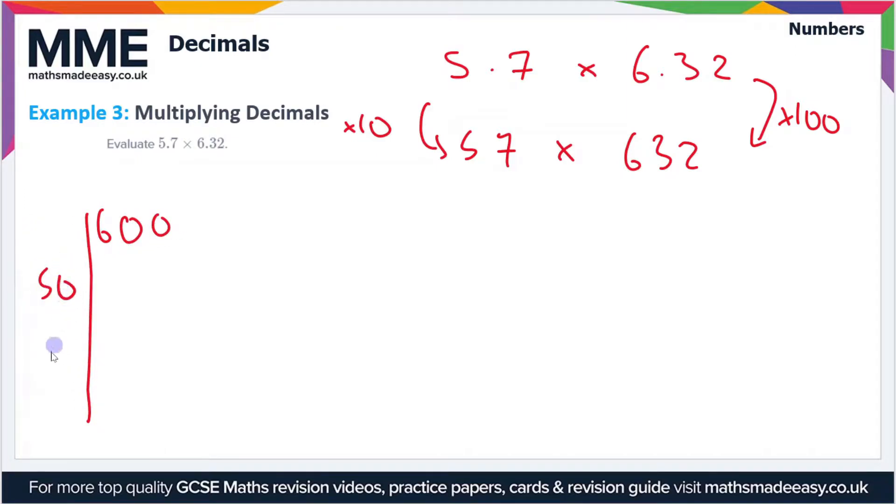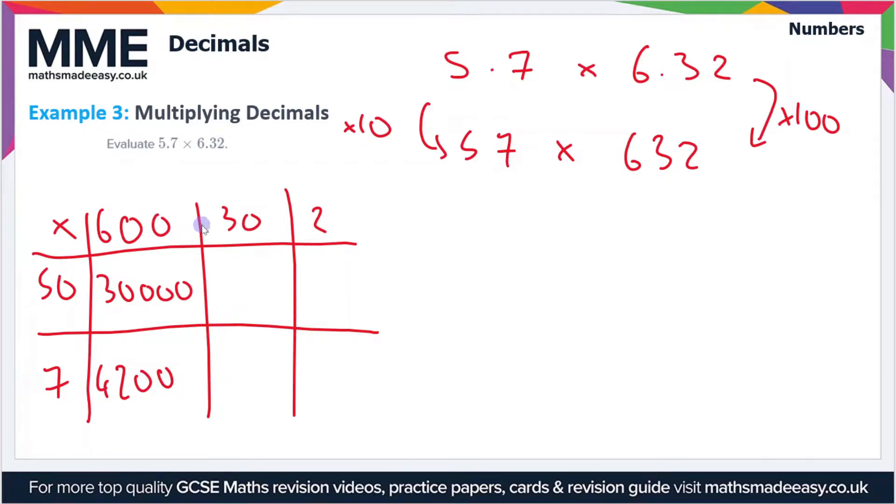So we've got 632 times 57, so our grid looks like this. First of all then, 50 times 600. 5 times 6 is 30, and then we add the zeros in. There's three zeros, so we get 30,000. Then we'll do 600 times 7. 6 times 7 is 42, so we get 4,200 if we add the zeros back in.